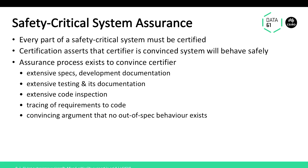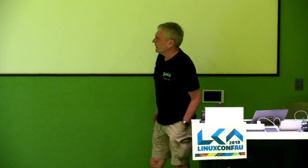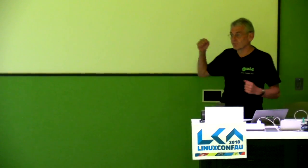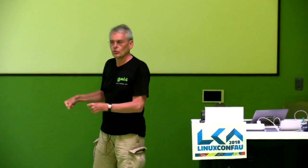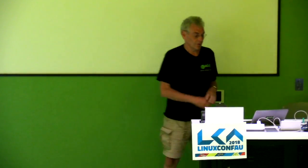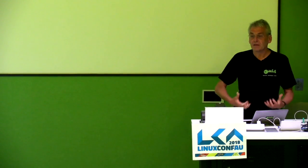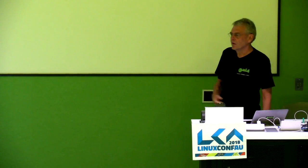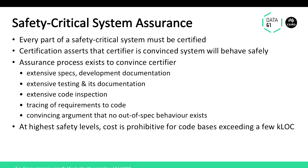The so-called assurance process basically involves extensive documentation for specification, development, and test regimes, along with expensive code inspection and tracing of all safety requirements to actual code. For a system of non-trivial size, this is extremely expensive. Changing every line of code is costly because you have to go through the whole process again. In the end, you have to come up with a convincing argument that there is no out-of-spec behavior. If your system is more than a few thousand lines of code, that's just prohibitive.